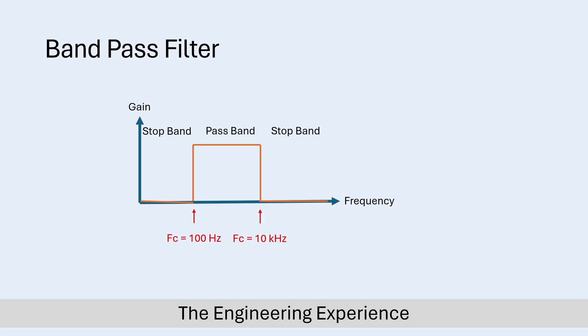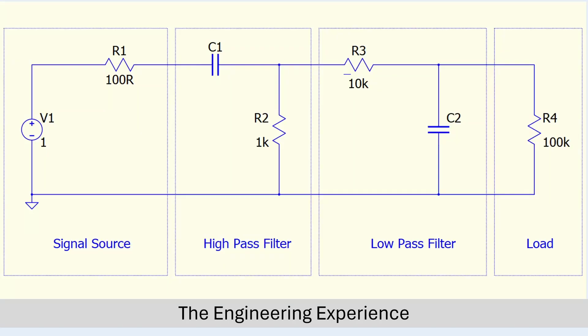A band pass filter typically has two cutoff frequencies, as you can see on the graph now. For the question we need to design the high pass filter with a cutoff frequency of 100 Hz, and we need to design a low pass filter with a cutoff frequency of 10 kHz. From the question we've been given some details about the filter configuration. First of all, the source impedance going into our band pass filter is 100 ohms, shown with this resistor here and our voltage source. And then we need to follow that up with a high pass filter.